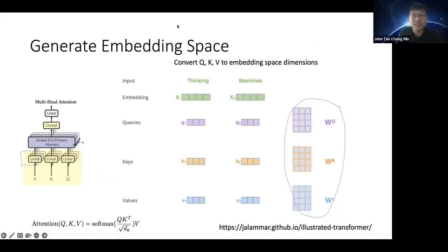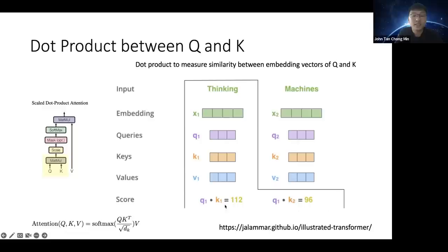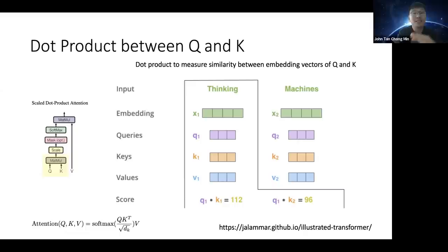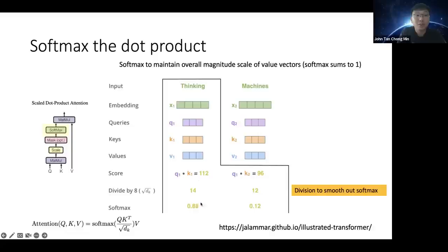After applying the linear layer, for the word 'thinking,' you compute the dot product between the query and each key. 'Thinking' and 'thinking' have the highest dot product since they're the same word; 'thinking' and 'machines' is slightly lower because they occupy different semantic spaces. After dividing by a normalizing factor and applying softmax, you get something like 88% attention to 'thinking' and 12% to 'machines.'